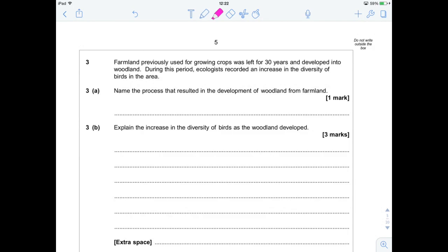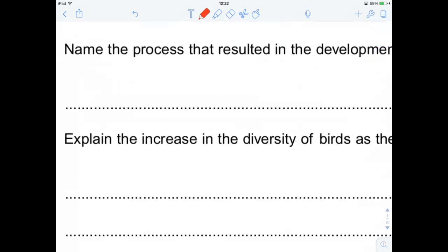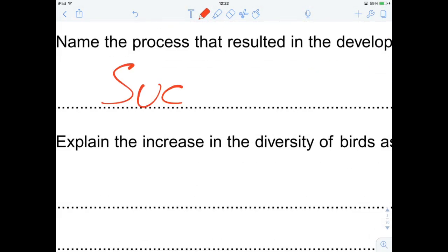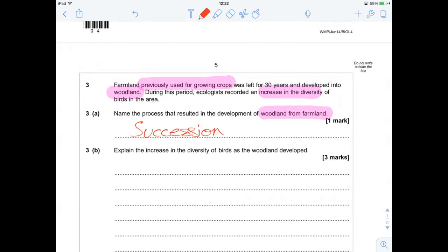So it says that farmland, previously used for growing crops, was left for 30 years and developed into woodland. During this period, ecologists recorded an increase in the diversity of birds in the area. Name the process that resulted in the development of woodland from farmland. Nice and straightforward, it's succession.